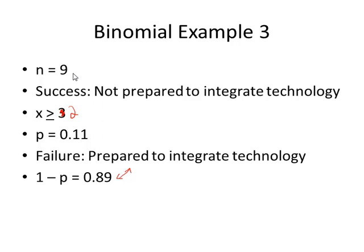By StatCrunch, n equals nine, p equals 0.11, x greater than or equal to two. If you're working this by hand, the complement of at least two is zero or one. You could plug in zero, plug in one, add those results, and subtract from one. Use the complement rule. The answer here should be 0.2599.